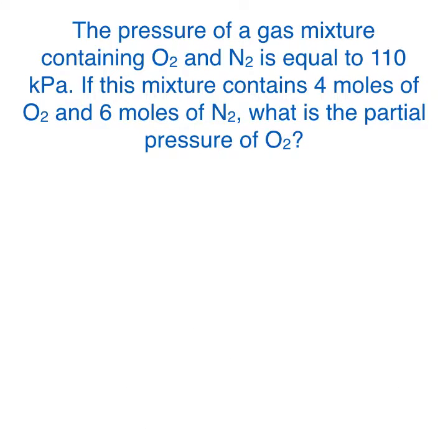Let's take a look at our problem. The pressure of a gas mixture containing oxygen and nitrogen is equal to 110 kilopascals. If this mixture contains 4 moles of oxygen and 6 moles of nitrogen, what is the partial pressure of oxygen?